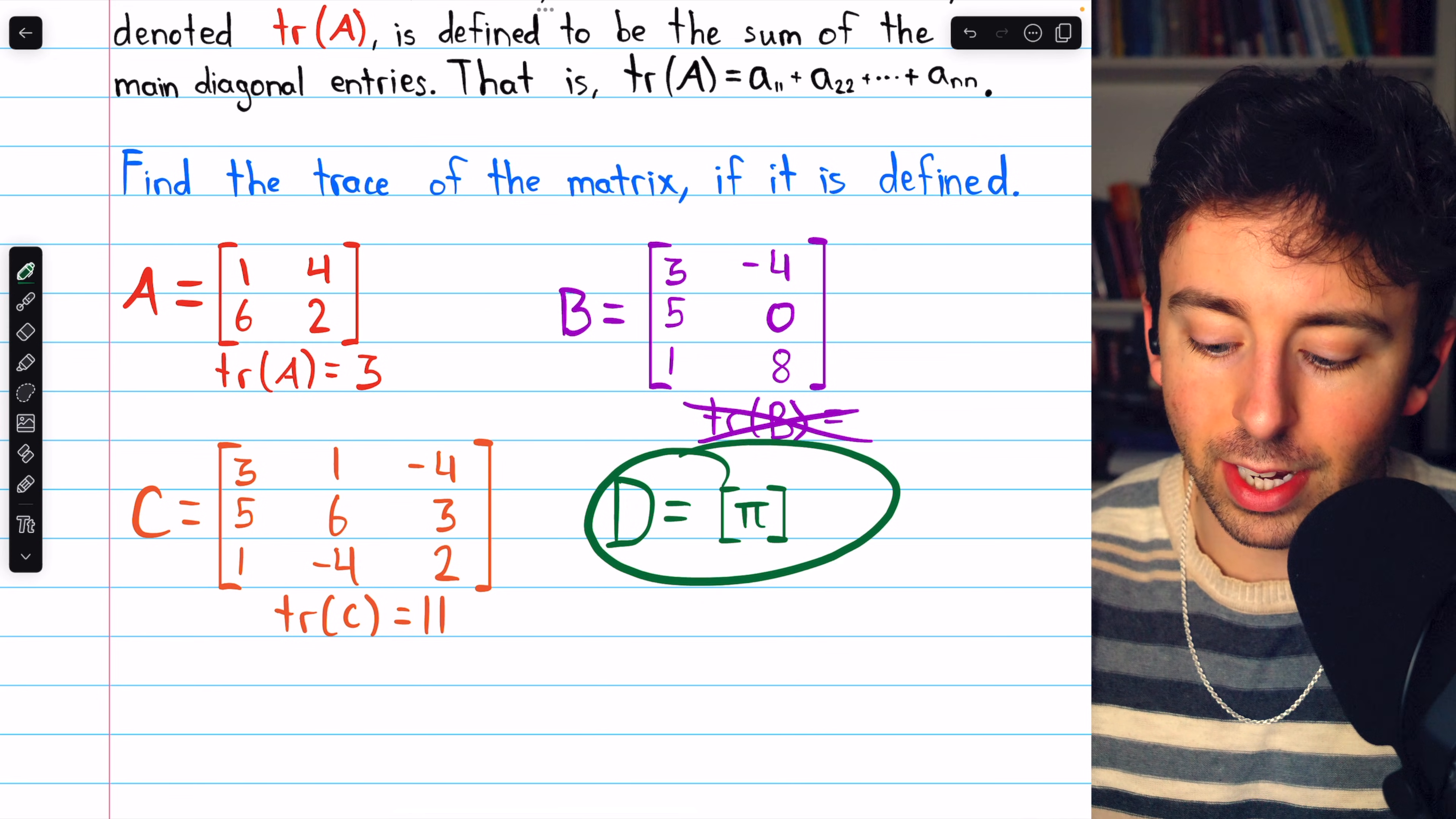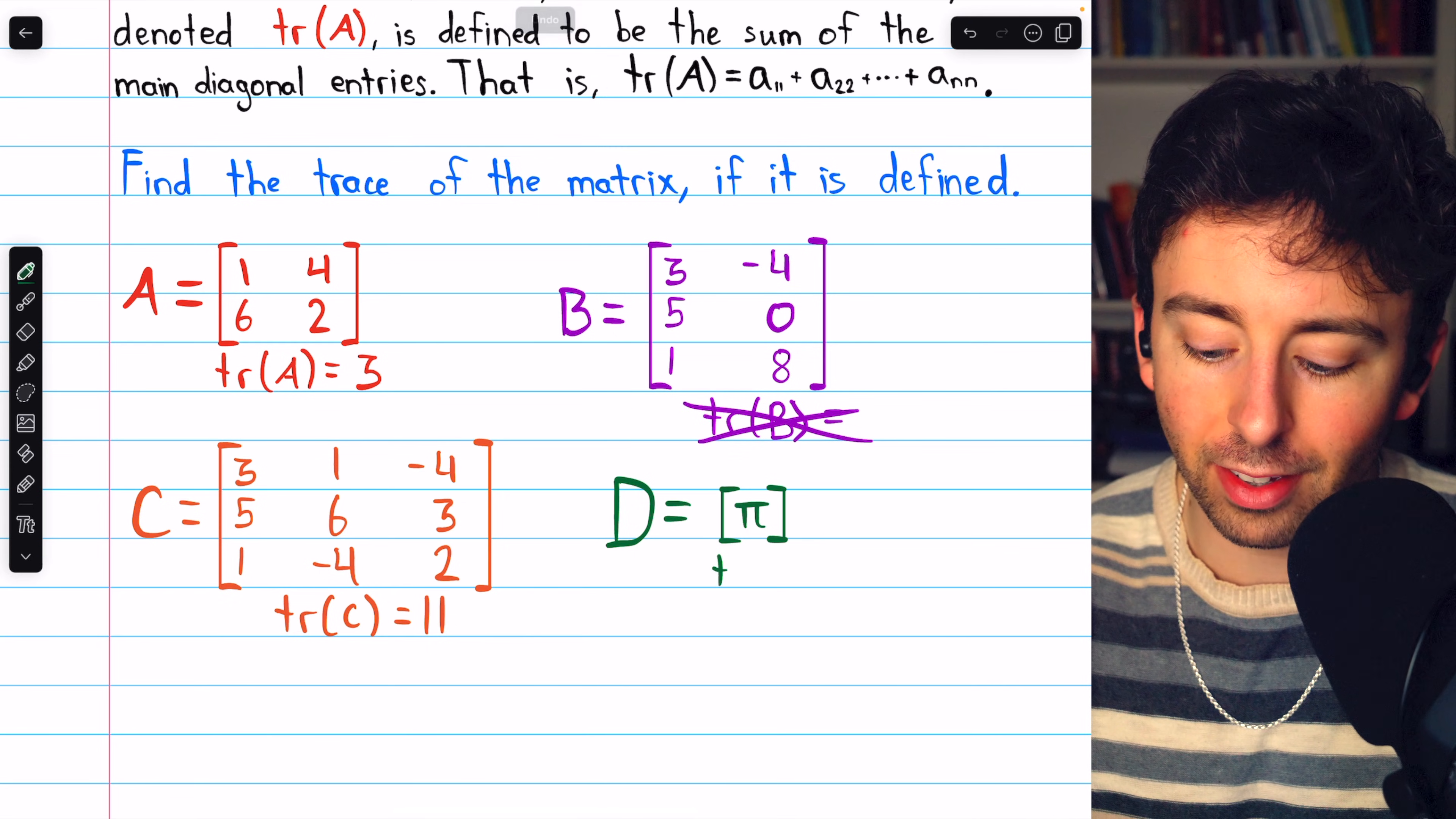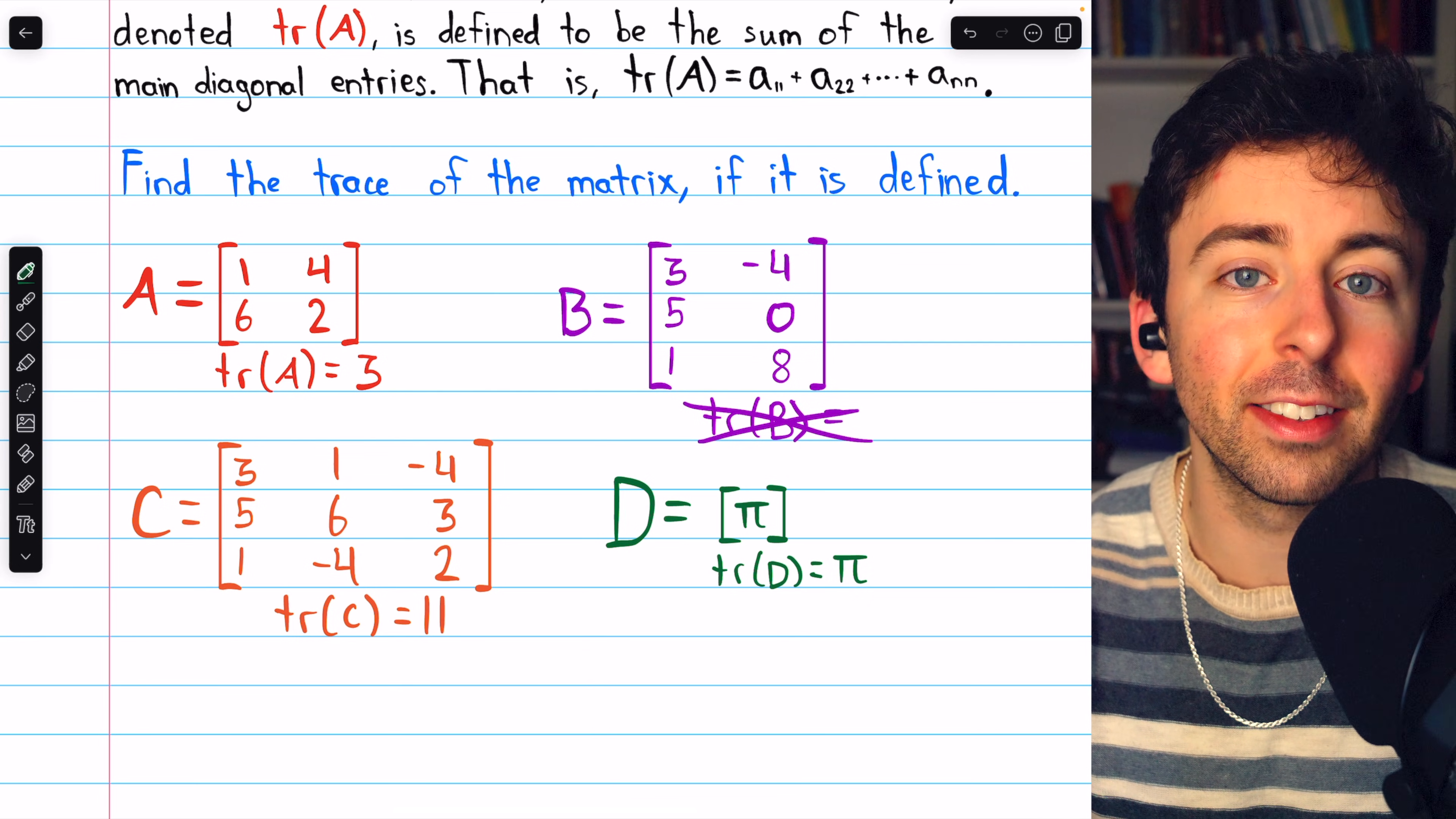Finally, what about matrix D? Matrix D has dimensions 1 by 1. It is a square matrix, and hence its trace is the sum of its diagonal entries. It has only one diagonal entry, which is its only entry at all, and that's pi. So the trace of D is pi.